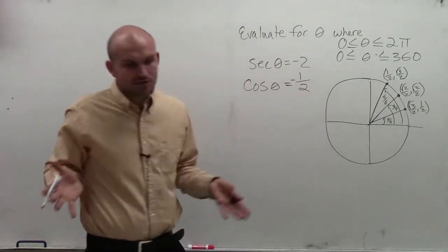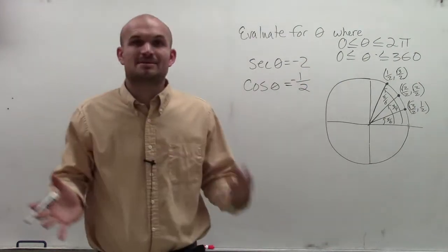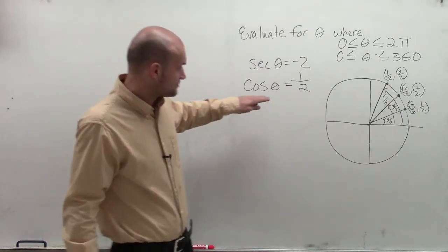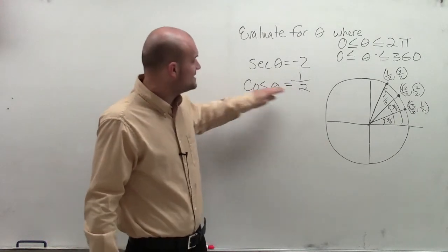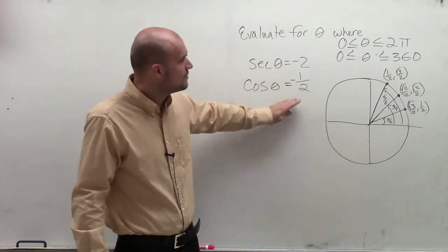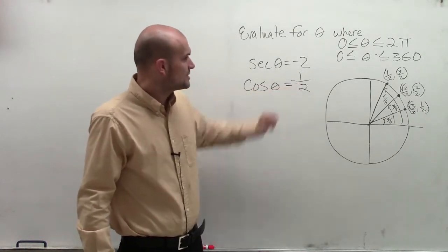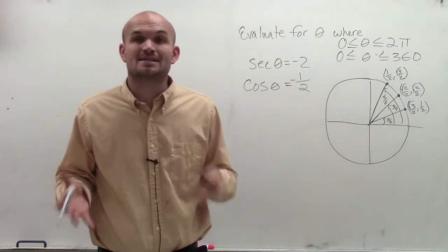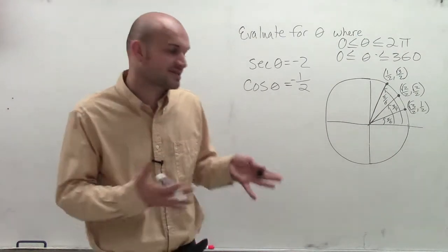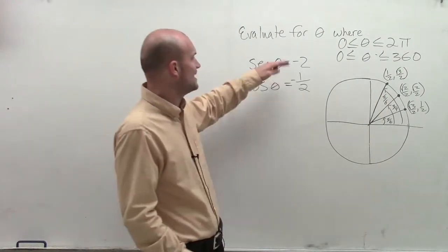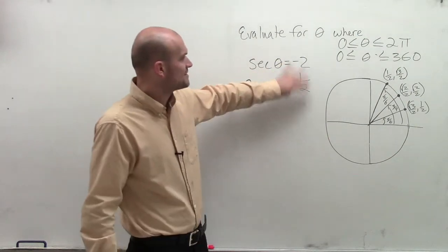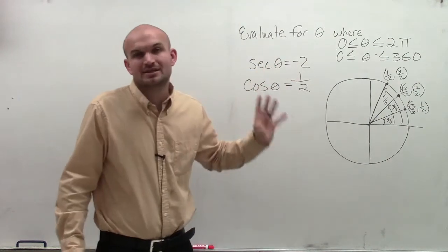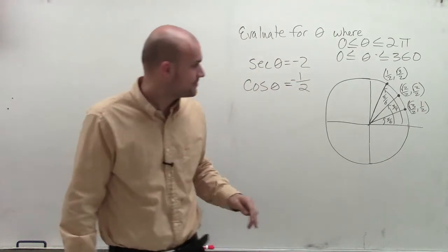I could do this problem the same exact way, but it's easier when looking at cosine, because when cosine equals negative 1 half, we can find that point on the unit circle. It's a lot easier to find than trying to think about what it would be if we just had secant.